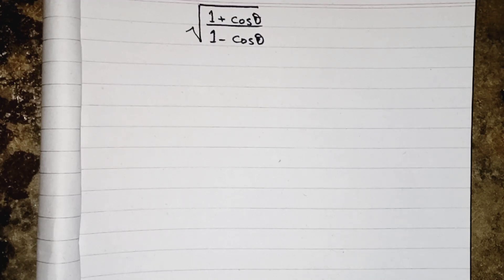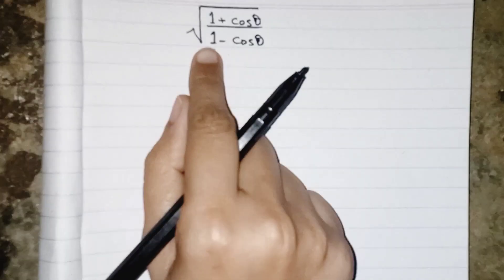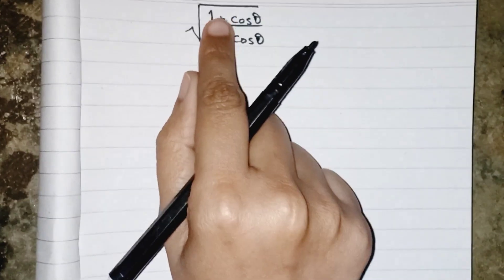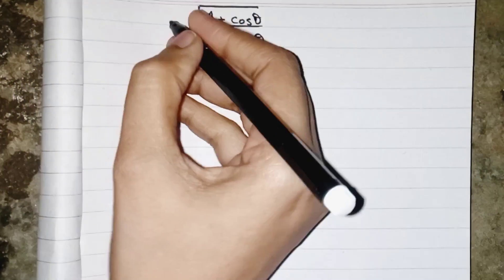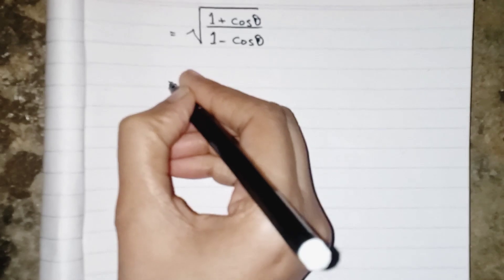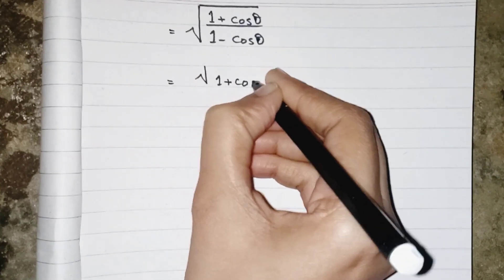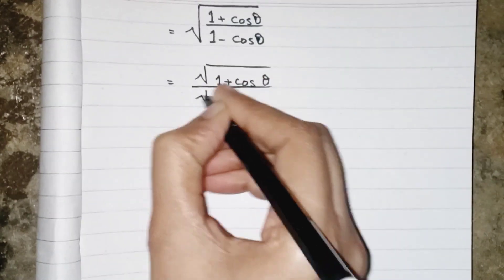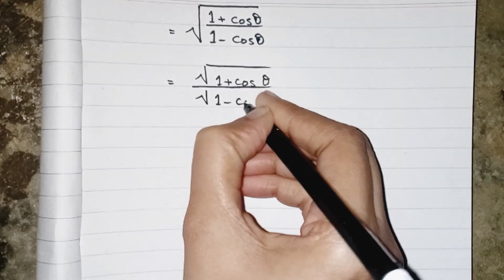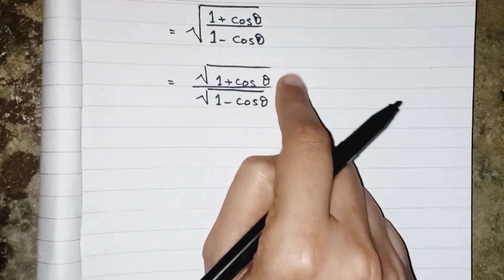Hello everyone, today's topic is trigonometry. We have the expression: under root of (1 + cosθ) divided by (1 - cosθ). We can write it as (1 + cosθ) over under root (1 - cosθ), because the whole root covers both numerator and denominator.